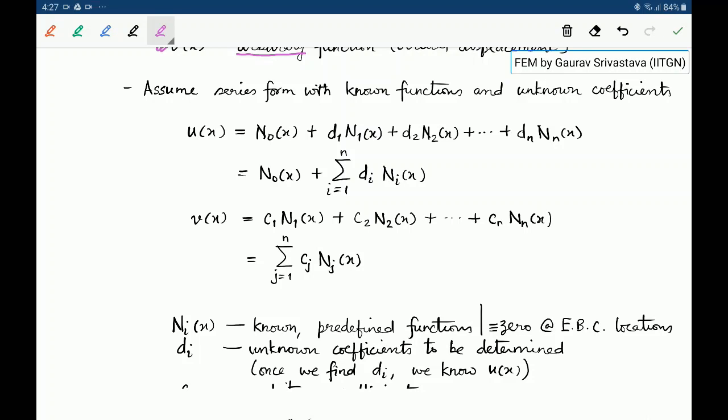Now to further propagate the idea of using a series solution, let us assume a series form for U and V. So for U of X, let us say U of X is written as N₀(x) plus d₁N₁(x) plus d₂N₂(x) and so on and so forth.